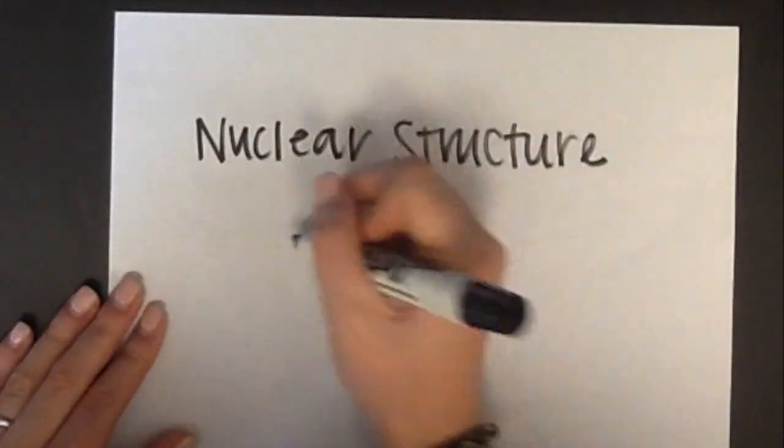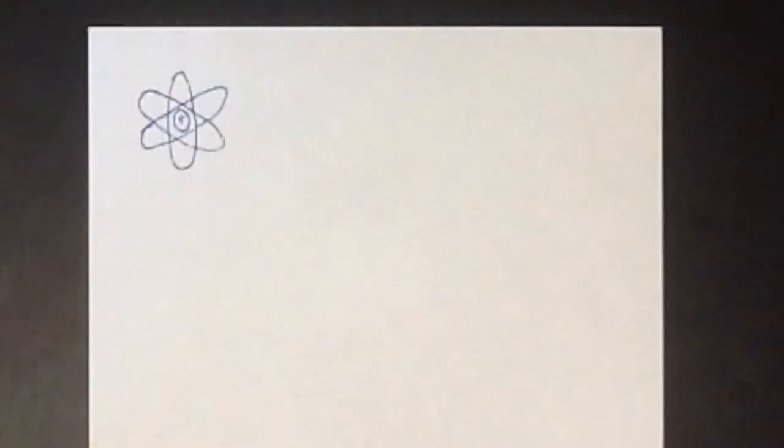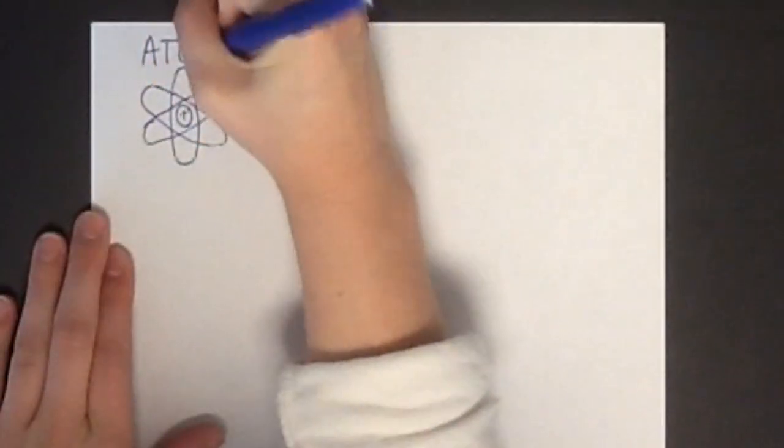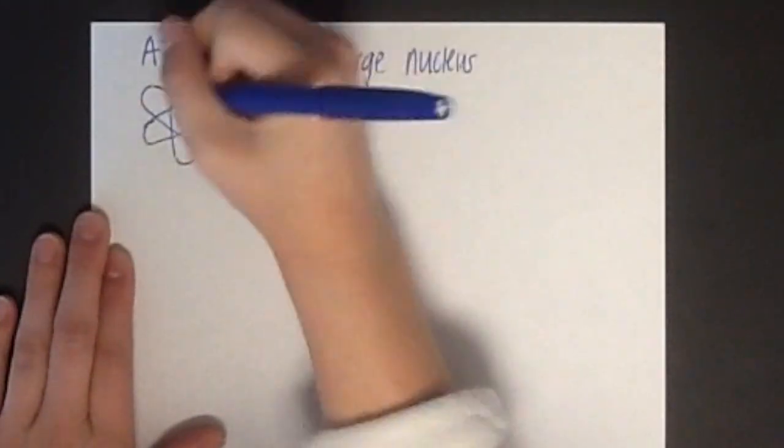On this edition of MC GenChem: Nuclear Structure and Radioactivity. All atoms have a positively charged nucleus and one or more negatively charged electrons moving around it.